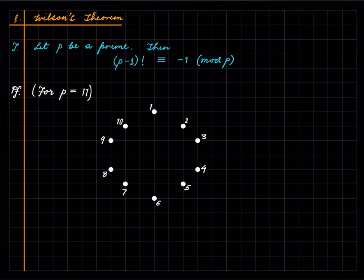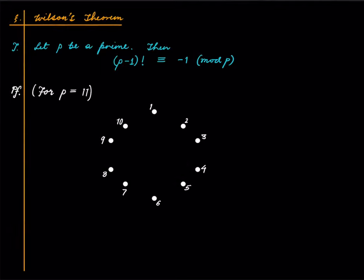So here is Wilson's theorem. Let p be a prime, then (p-1)! ≡ -1 (mod p) is the statement of Wilson's theorem. It's a strange looking theorem, but the proof is very nice. I will prove this theorem only for p = 11, but this is true for all primes. Once you follow this reasoning, you'll be easily able to generalize it to arbitrary primes.